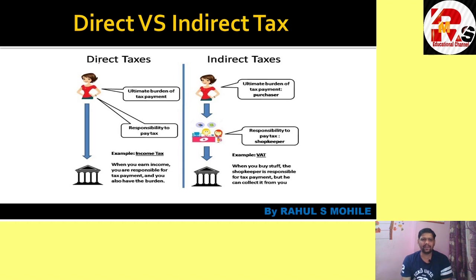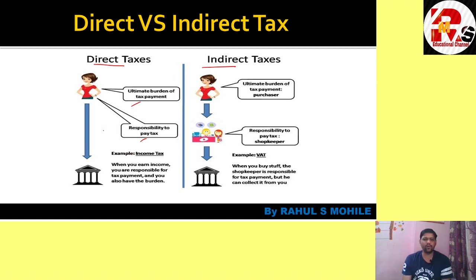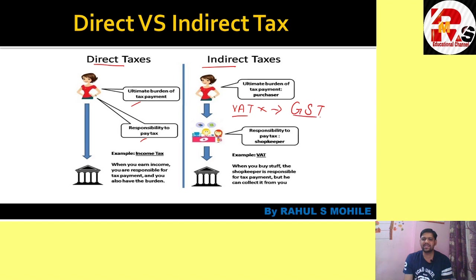In the diagram, direct tax is a tax whose ultimate burden — the responsibility to pay — falls on the person who earns the income. For indirect tax, when you purchase something from a shop, you pay tax to the seller, who then pays it to the government. The best earlier example was VAT, but now all those taxes are replaced by a single tax called GST — the GST Act 2017 — which we will study in detail in Semester 6.